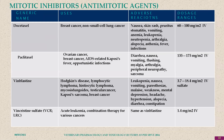Pentostatin is used in alpha-interferon refractory hairy cell leukemia. Thioguanine is used in acute leukemias. Mitotic inhibitors or anti-mitotic agents include docetaxel, paclitaxel, vinblastine, and vincristine.